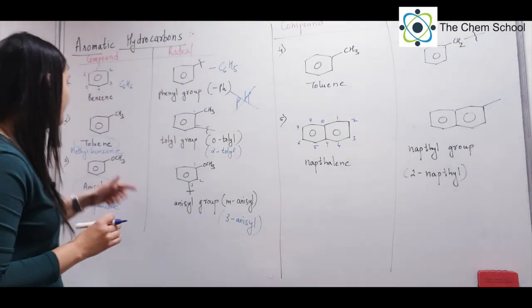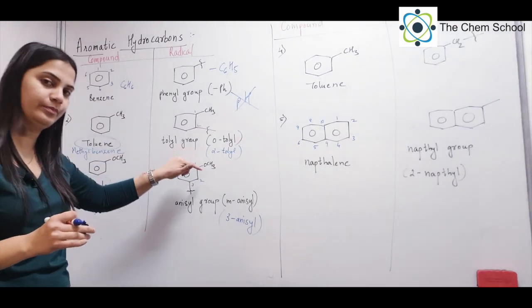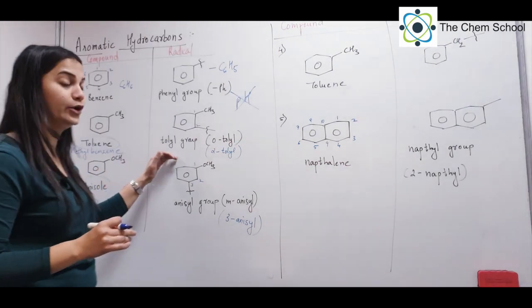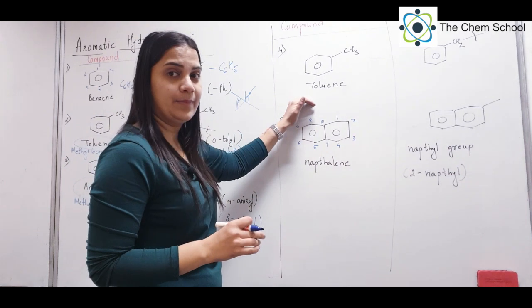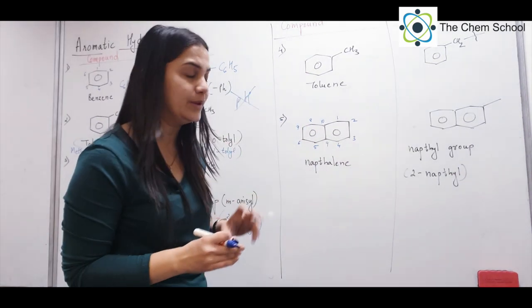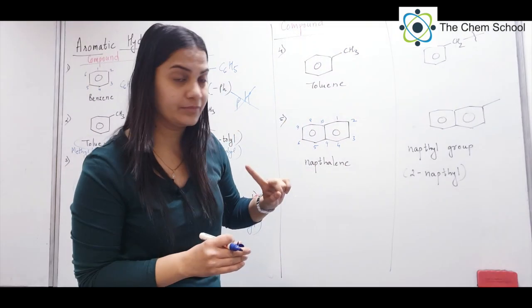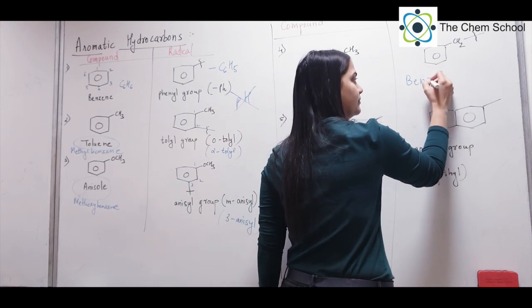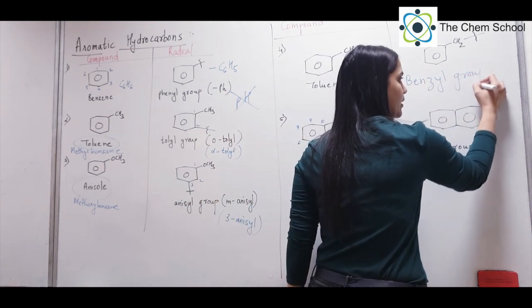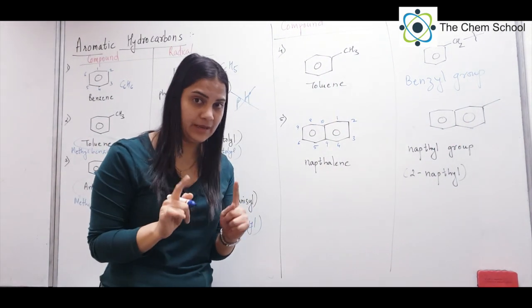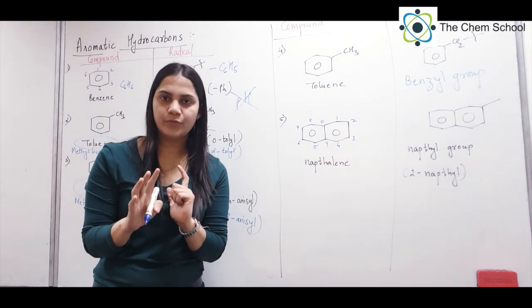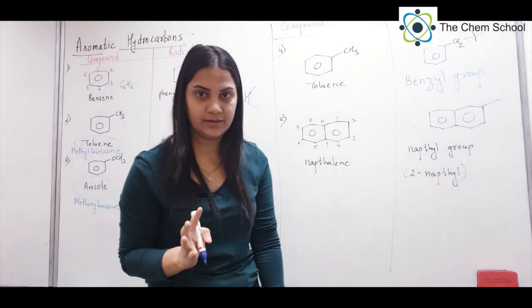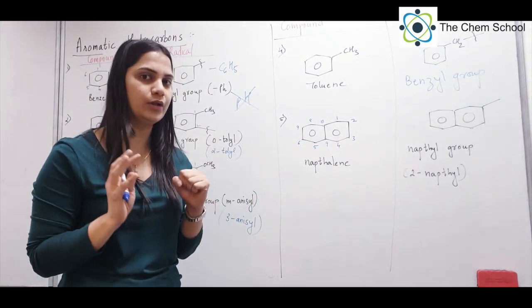One important thing to understand about toluene: if you remove a hydrogen from the aromatic ring, you get the tolyl group. But if you remove one hydrogen from the CH3 group of toluene, that is different — that becomes the benzyl group. I repeat: toluene with aromatic ring H removed → tolyl group; toluene with one H removed from CH3 → benzyl group. Keep this distinction in mind.